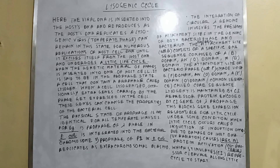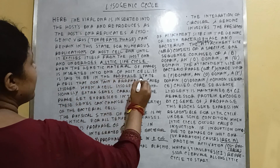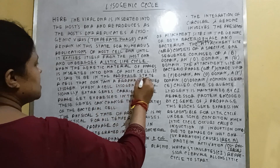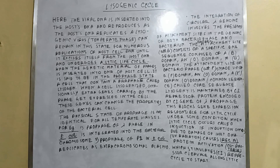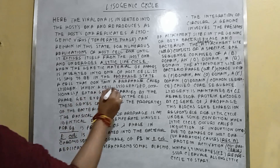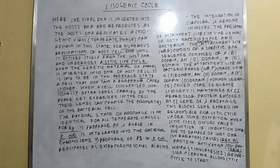When the viral DNA integrates into the DNA of the host cell, it is said to be the prophage or the prophage state. When the viral DNA enters within the bacterial cell, this is called the prophage state. And a cell that contains the prophage is called the lysogen.